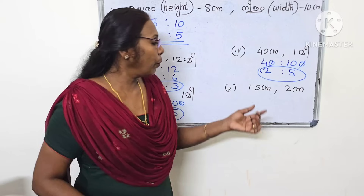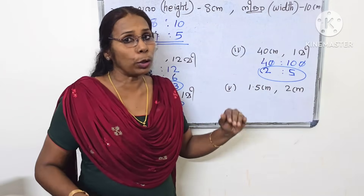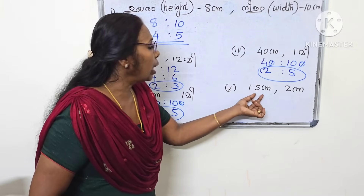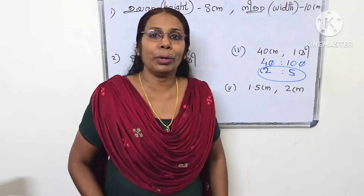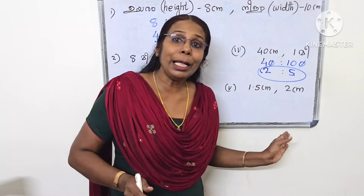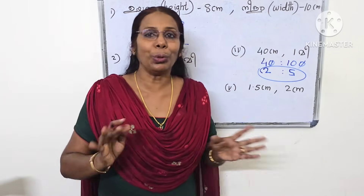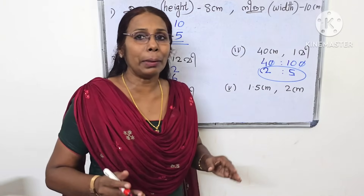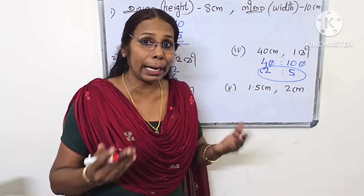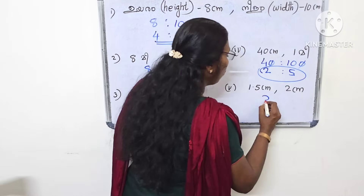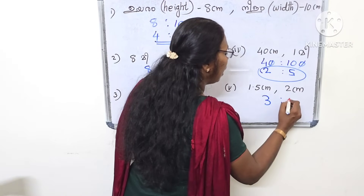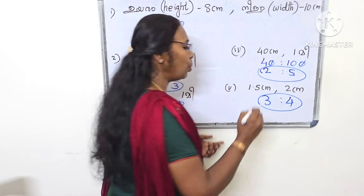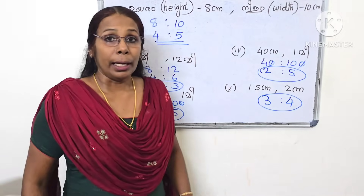If we need to add: we start by adding 1, then add 2, then add 3, then add 4. So 3 is to 4. This is the answer.